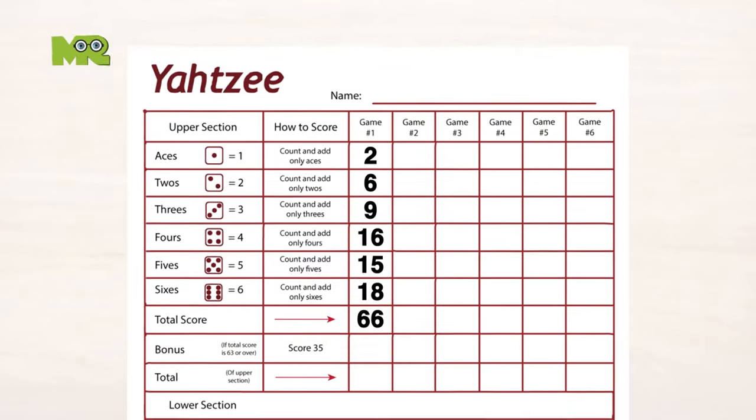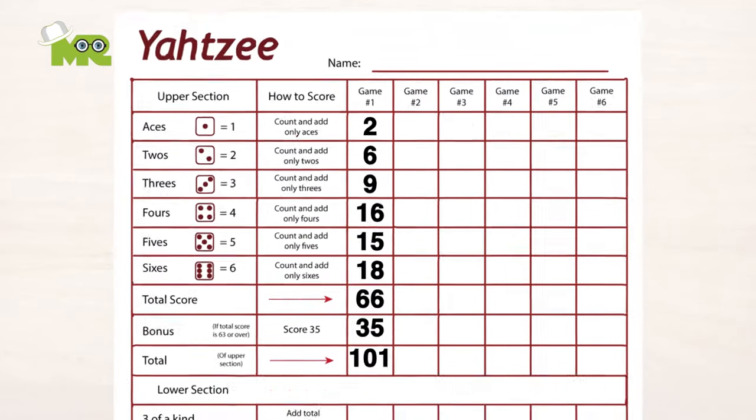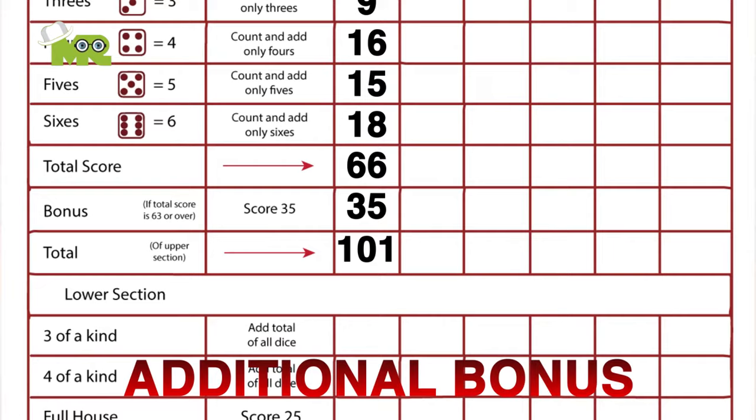Six: If a player gets 63 or more points from their top six boxes only, an additional bonus of 35 points is rewarded.